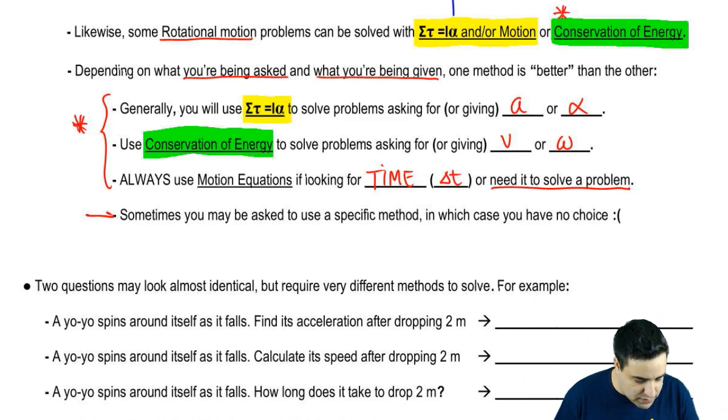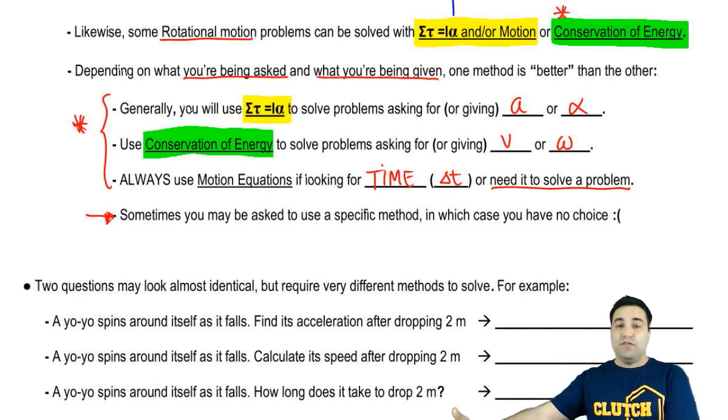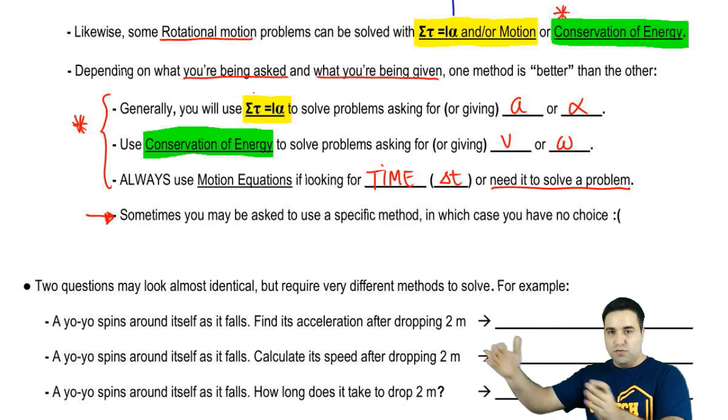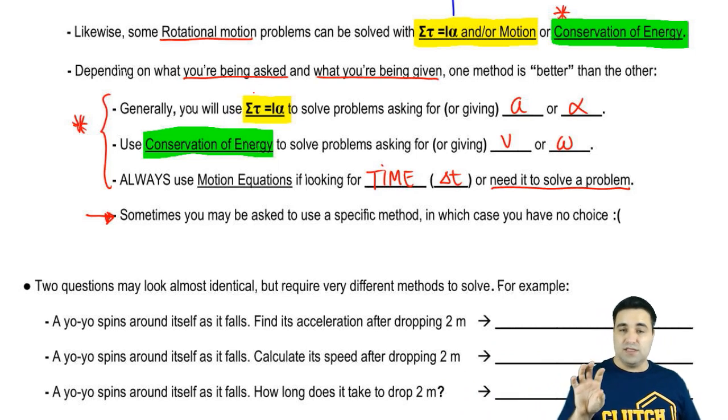So I think this is really important to remember. And it helps a lot make a combination of all these topics easier to work through. Sometimes, however, you're not going to have a choice. You'll be asked to do this in a specific way. Even if you could have used an easier method, sometimes a question will say, you know, using Newton's laws, which means F=ma or torque equals I alpha, do this. So what professors will do sometimes is force a method upon you to make sure that you can't use an easier method. Okay?